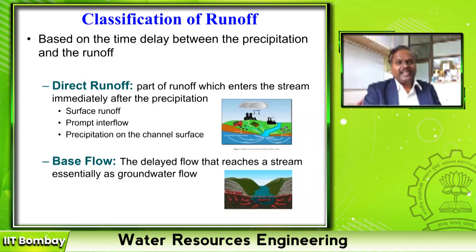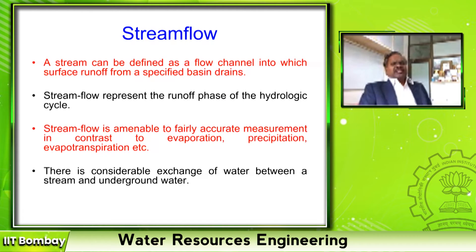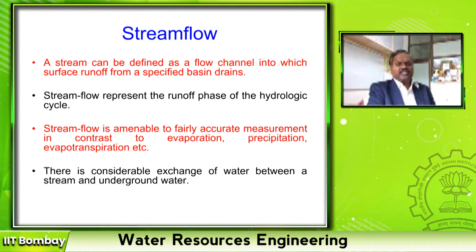Suppose if I am doing daily runoff estimation, then last week's runoff should not be counted as this week's runoff — that comes under base flow. Base flow is nothing but delayed flow that reaches the stream through infiltrated water. Stream flow is just the runoff or discharge flowing in a defined path of a stream. A stream can be defined as a flow channel into which surface runoff from a specified basin drains. Stream flow represents the runoff phase of the hydrological cycle.